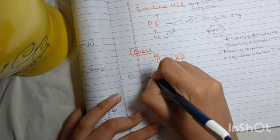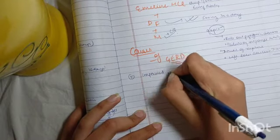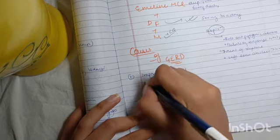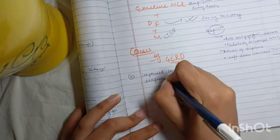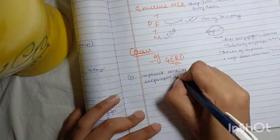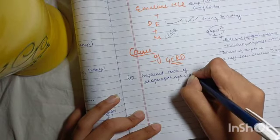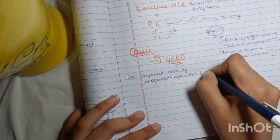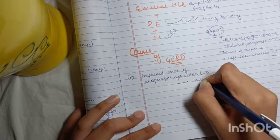So first of all what we see is if there is an impaired tone of esophageal sphincter. Now this can be seen in hiatus hernia.